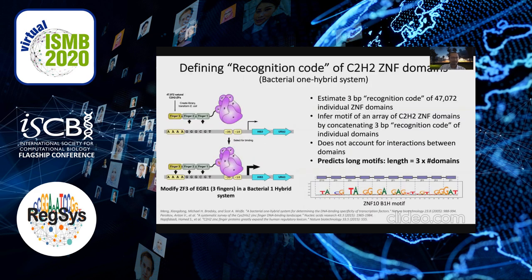A lot of work has been done in determining what the zinc finger recognition code is. Bacterial one-hybrid assays were modified, and the EGR1 zinc finger TF was modified in a way that the last zinc finger is changed, so that the preferences of different zinc finger domains could be learned. You can concatenate predictions learned by this B1H method to make a predicted motif for every zinc finger transcription factor — this is referred to as the B1H recognition code.